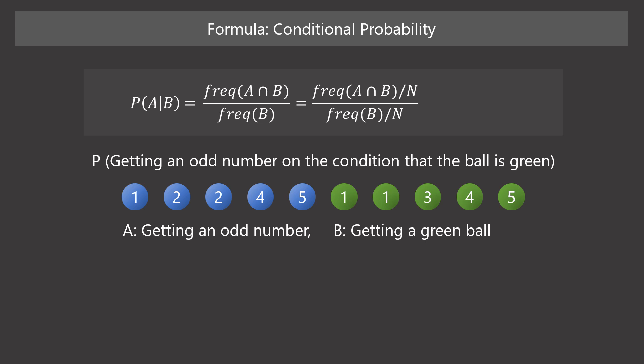We can rewrite this formula. Let's divide the denominator and the numerator by the total number of possible outcomes. In the ball example, it is the total number of balls. Frequency of an event divided by the number of possible outcomes represents the event's probability of occurring. We can rewrite this formula as the probability of intersection of A and B divided by the probability of B. Using this formula, we can solve the ball example in this way.